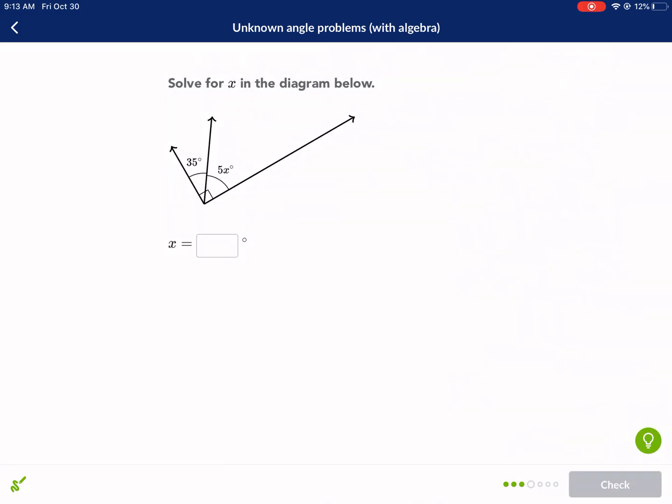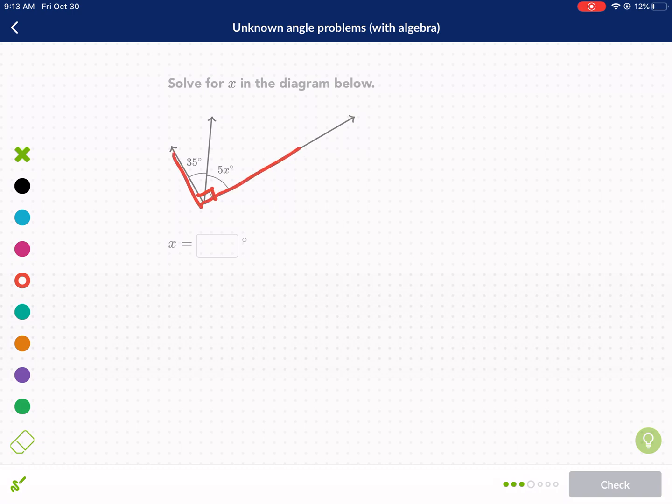Next question. We have another scenario where it's a complementary angle. We have it adds up to 90 degrees. So we're going to say 35 plus 5X equals 90 degrees. We subtract 35 first. We get 5X equals 55 divided by 5, X equals 11. I think you guys are getting this by now.